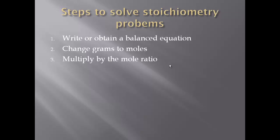The next step is to multiply by the mole ratio. Now the mole ratio comes from the balanced equation, and we'll talk more about that later, but that is a key step in stoichiometry problems. The last step is to change moles to grams. If the problem asks for grams, then you need to get grams. If the problem asks for moles, then you already have moles and you don't have to do that step.